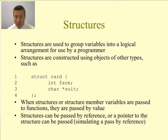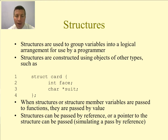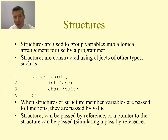When structures or structure member variables are passed to functions, they are passed by value. We've talked about how to pass a variable by reference — if you want to pass a variable by reference, you have to include the ampersand in front of the name of the variable. We can also have pointers to structures. In that case, if you pass a pointer to a structure into a function, it would simulate a pass by reference, because if you dereference that pointer inside of the function, you're going to be accessing the same locations in memory.